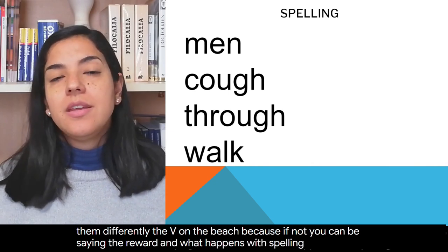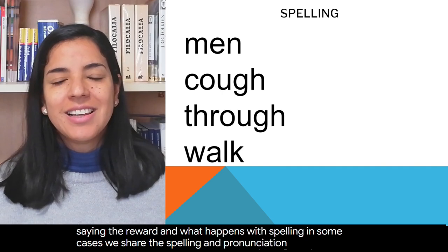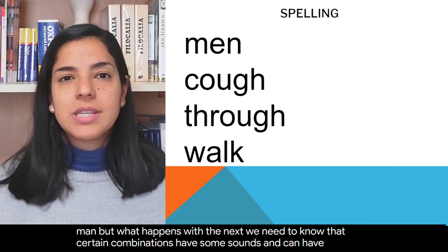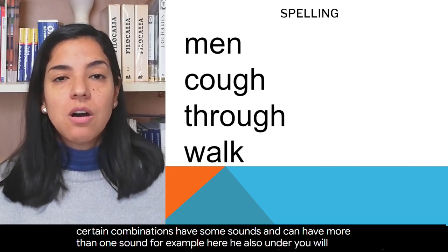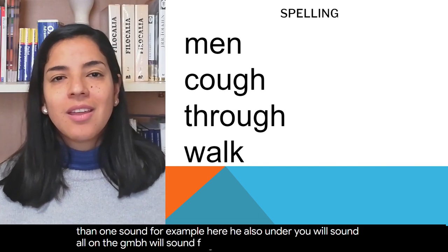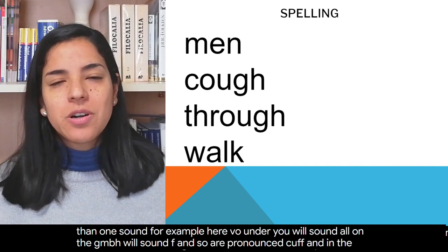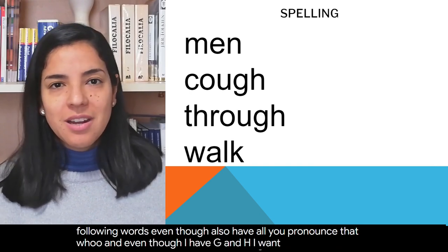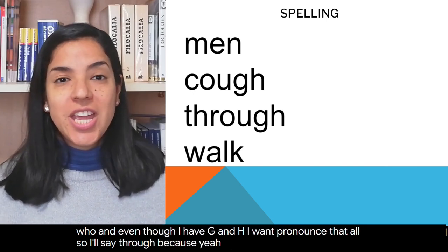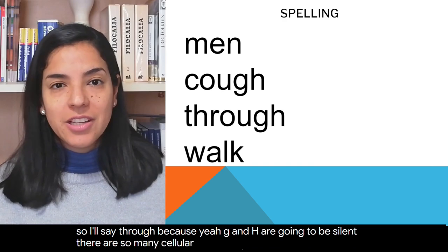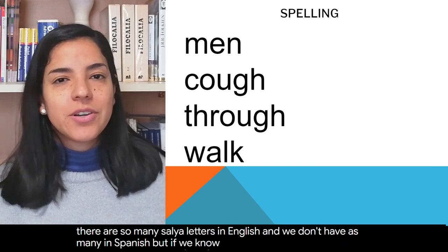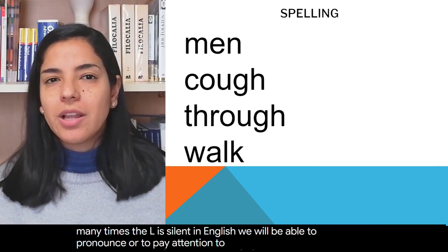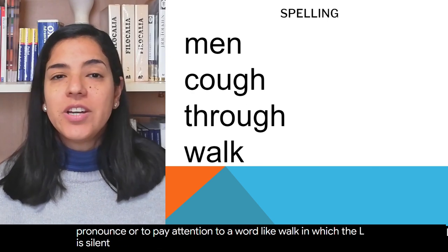And what happens with spelling? In some cases we share the spelling and the pronunciation, like in the word 'man.' But we need to know that certain combinations have some sounds and can have more than one sound. For example, the O and the U will sound as one sound, and the G and the H will sound like F — so I'll pronounce 'cough.' And in the word 'through,' even though I also have OU, I'll pronounce that U differently, and the G and H will be silent. There are so many silent letters in English. If we know that, for example, the L is often silent in English, we will be able to pronounce a word like 'walk' correctly. But if you never know, then you'll never know.